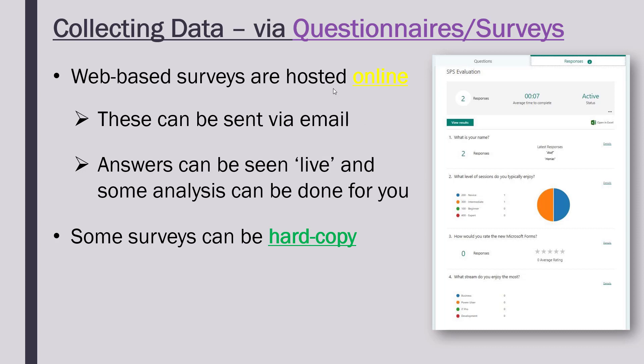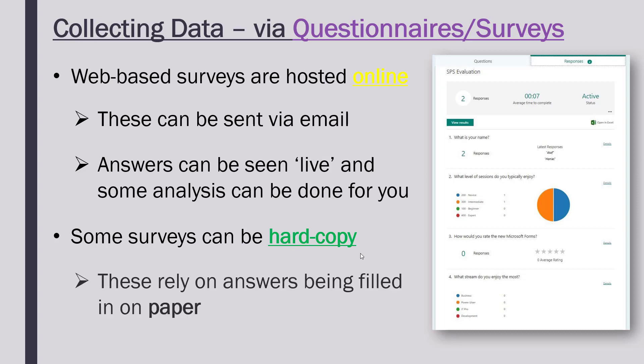Online surveys exist but other surveys are offline and are said to be hard copy. A hard copy is a physical questionnaire on paper — printed out or written out and filled in on paper. Obviously if you're doing it on paper the answers are not going to be sent automatically; you'd have to collect all the papers in and analyse it yourself, which takes more time. However, not everyone has access to the internet, so some people might need a hard copy questionnaire to be able to give their opinion.